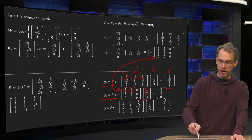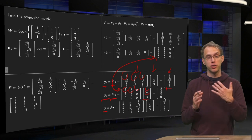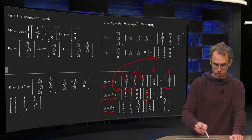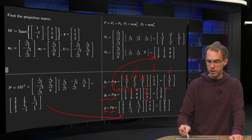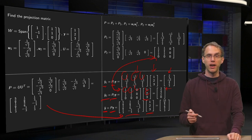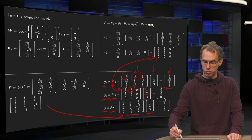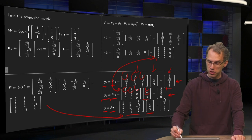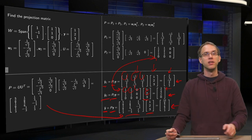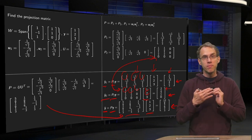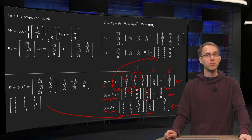Now you can compute your ŷ, the projection of y onto W, in two ways. You can use your matrix P and compute P times y. Or alternatively, ŷ equals ŷ1 plus ŷ2, so you can add those two. You can check the arithmetic yourself — in both cases you end up with the same result. Once you have your projection matrix, you can compute the projection of any vector onto your subspace.